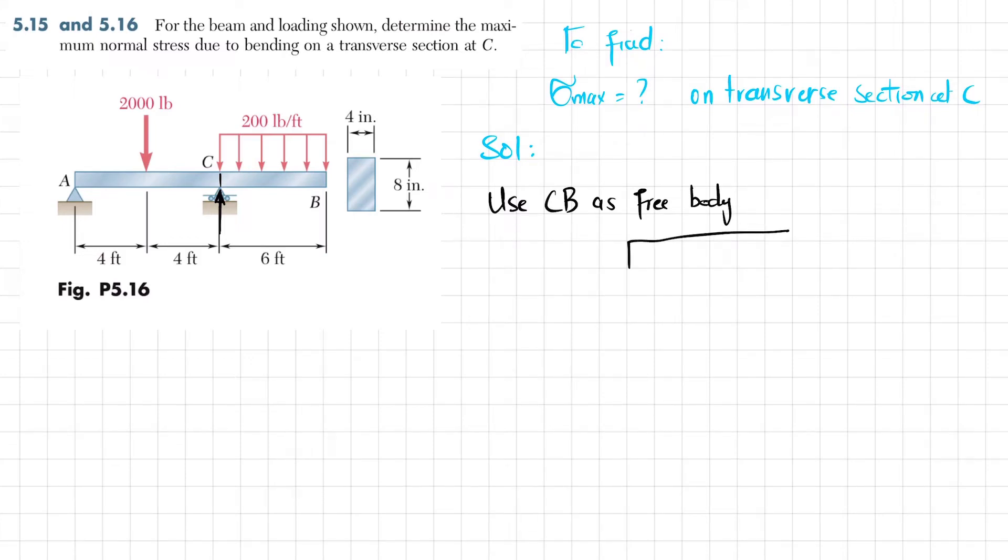Portion CB: this is point C and this is point B. At portion CB we have a uniformly distributed load given as 200 pounds per foot. The length between C and B is 6 feet.